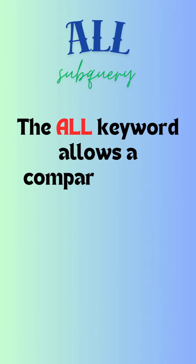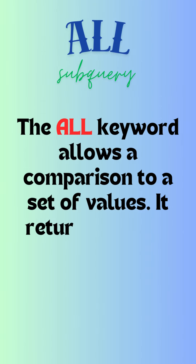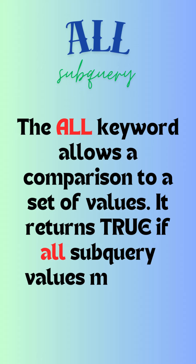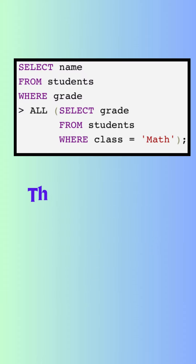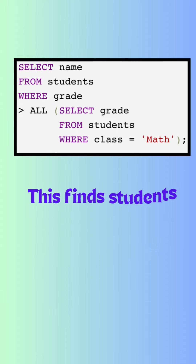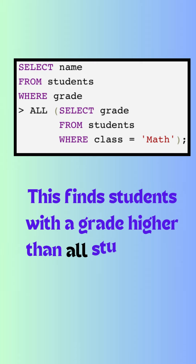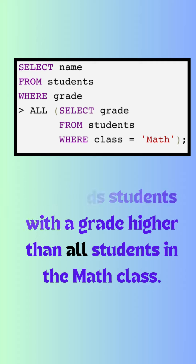The ALL keyword allows a comparison to a set of values. It returns true if all subquery values meet the condition. As you can see in this example, this gives us students with a grade higher than all students in the math class.